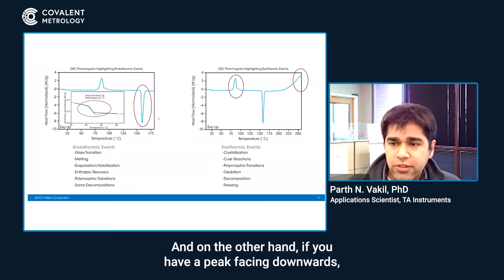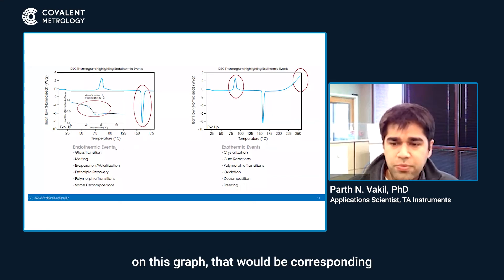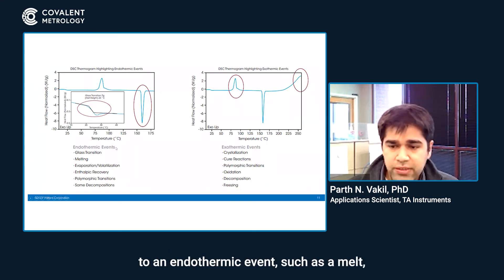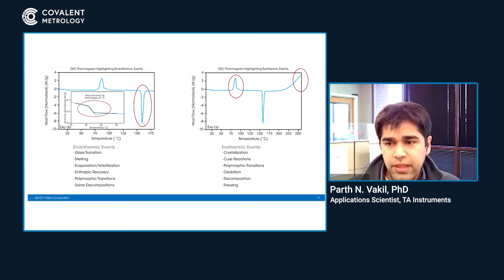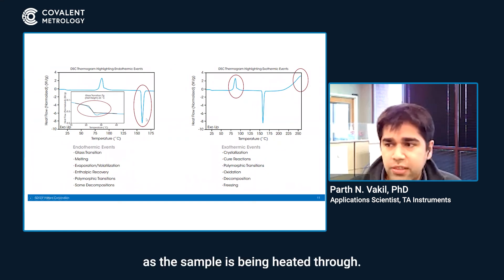On the other hand, if you have a peak facing downwards on this graph, that corresponds to an endothermic event, such as a melt or certain types of transitions, or when a liquid or solvent vaporizes and takes heat as the sample is being heated.